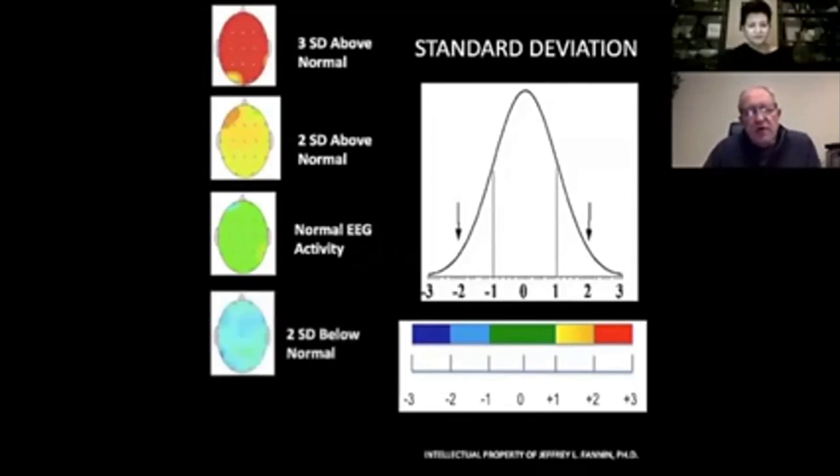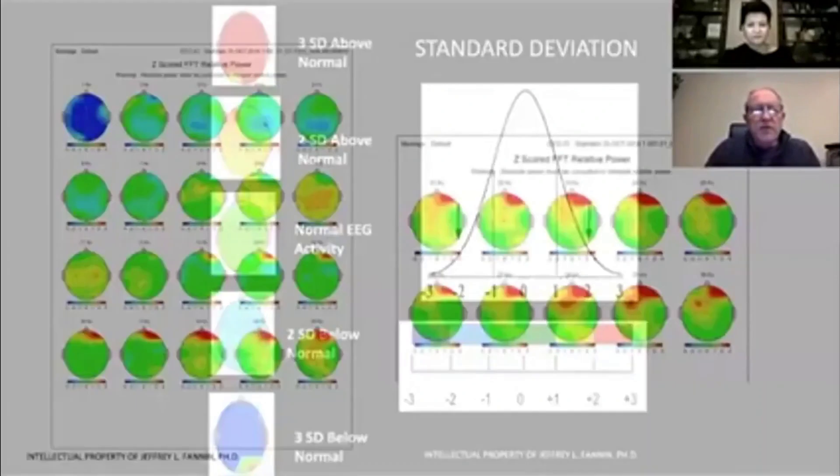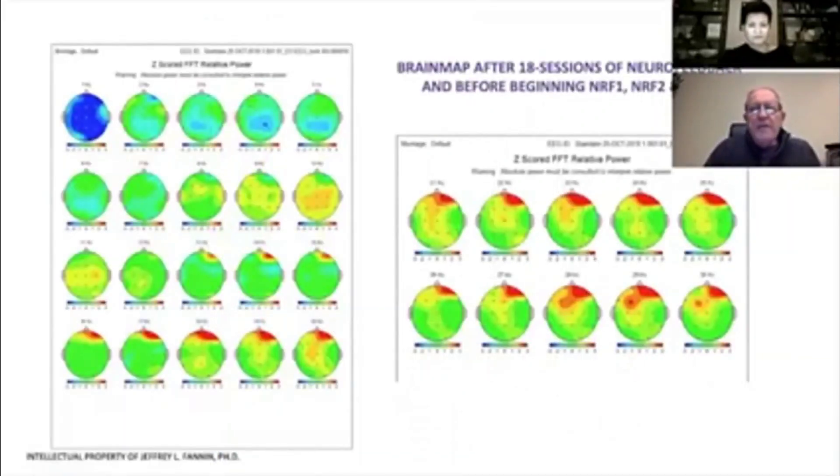On the other side of the scale, we have two standard deviations below normal, which is light blue, and dark blue is three standard deviations below normal. A lot of people will equate that with good and bad, but that's not necessarily the case. It really depends on the frequencies.